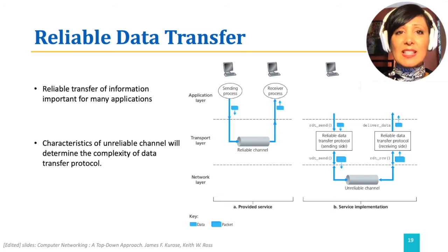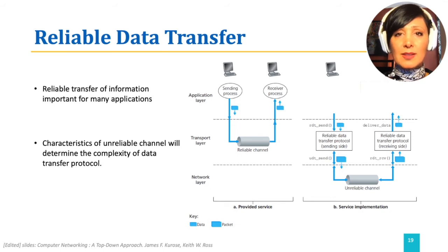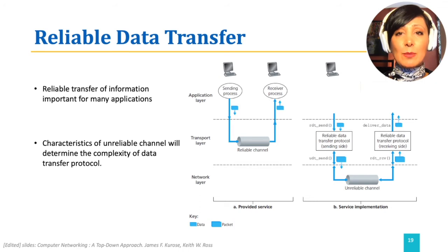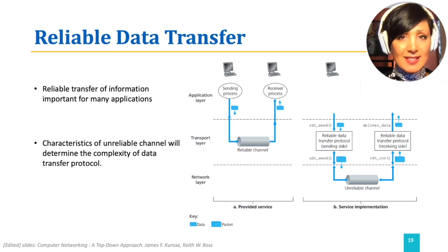The characteristics of the unreliable channel will decide the complexity of the protocol. We will refer to the reliable data transfer process that we want to implement as RDT, and discuss this process using the definition of four main functions.